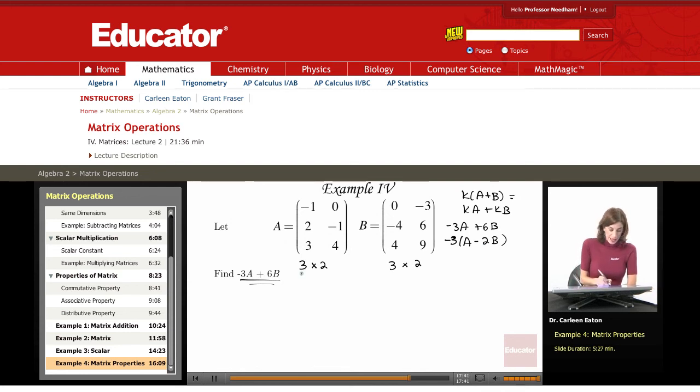So starting out, the first thing we're going to need to do is multiply A by negative 3, the scalar negative 3. And from that I can find negative 3A.